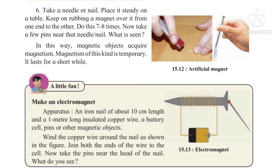Let's make an electromagnet. For that, we need an iron nail of about 10 cm, a 1-meter long insulated copper wire — the kind used in electrical circuits — and a battery cell. We also need pins or other small magnetic objects.